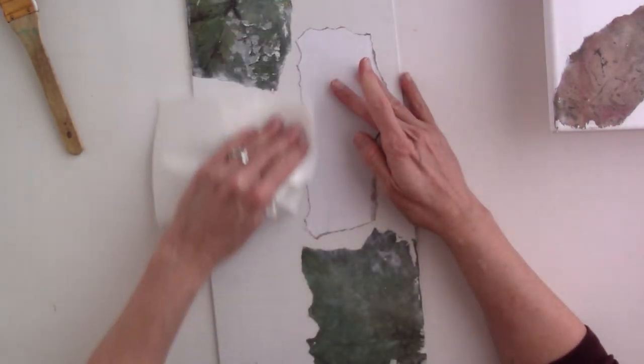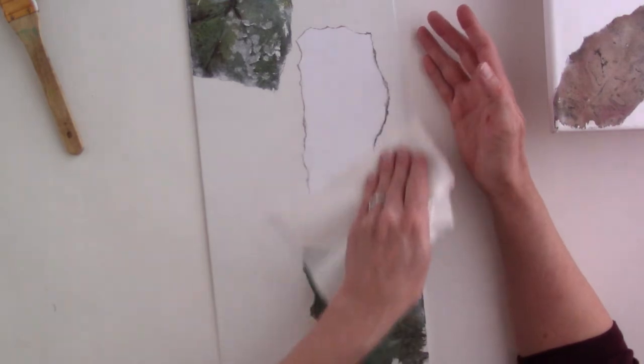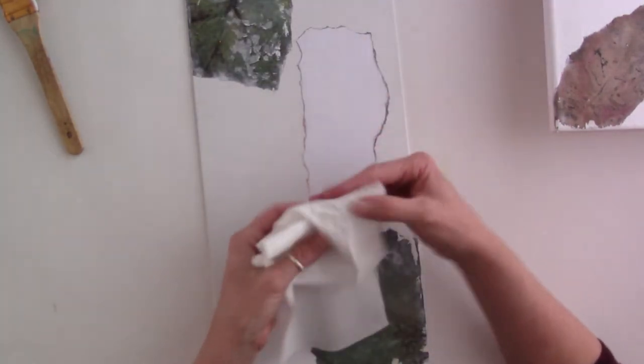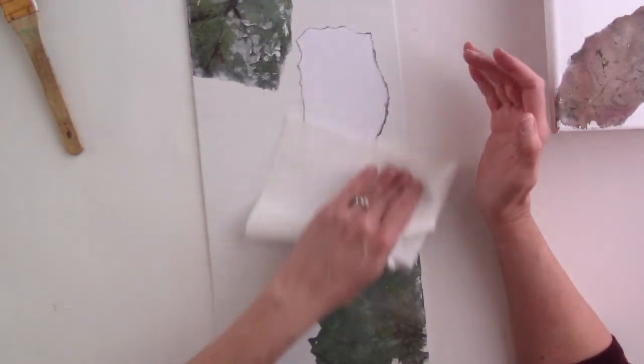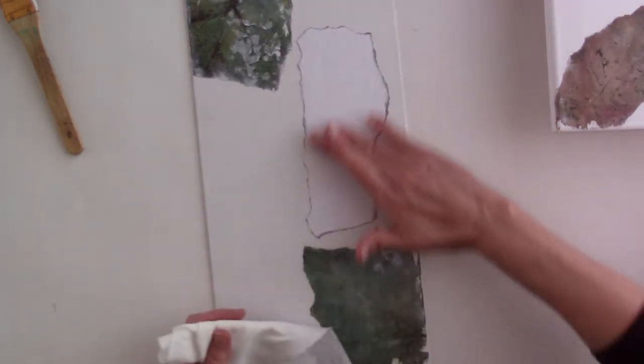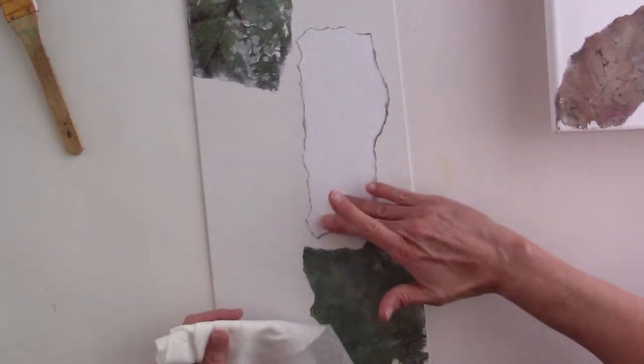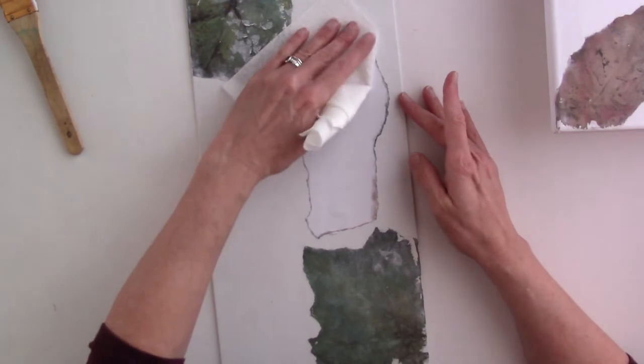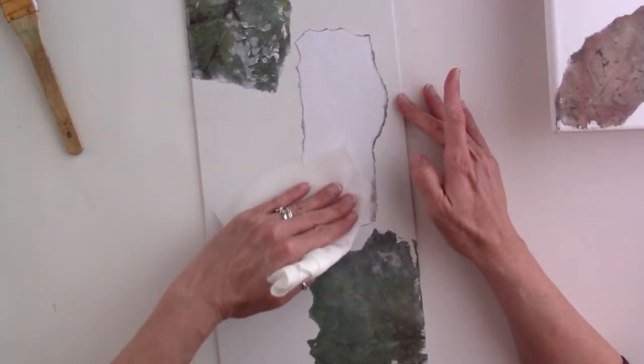I'm going to wipe the edges of this extra glue away. That'll be perfectly fine to paint over and do whatever you want. If you accidentally got a little glue on the top, just take a dry part of your paper towel and give that a once over.